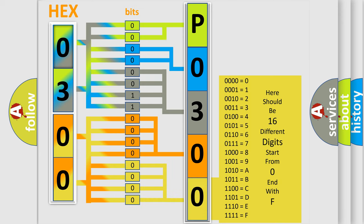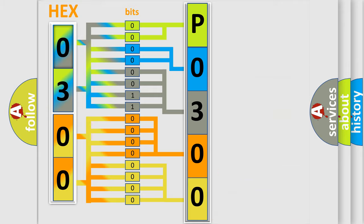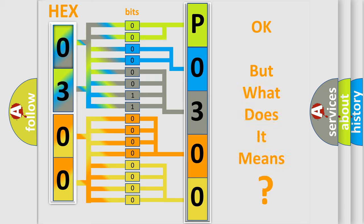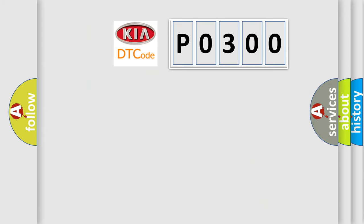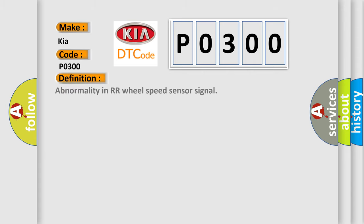We now know in what way the diagnostic tool translates the received information into a more comprehensible format. The number itself does not make sense to us if we cannot assign information about what it actually expresses. So, what does Diagnostic Trouble Code P0300 interpret specifically for KIA car manufacturers? The basic definition is: Abnormality in rear-right wheel speed sensor signal.